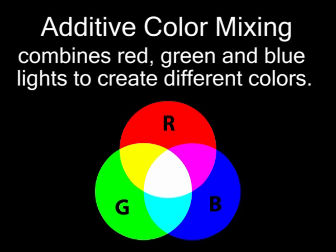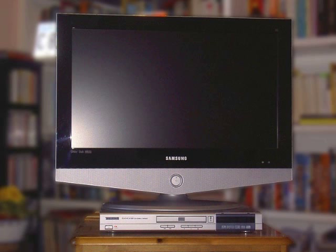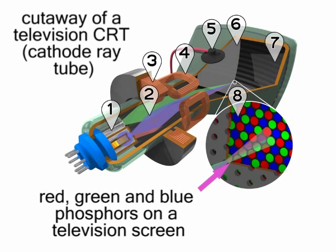The other system is called additive color mixing. Additive color mixing is used in television and computer displays, where light sources are combined to create varying colors.